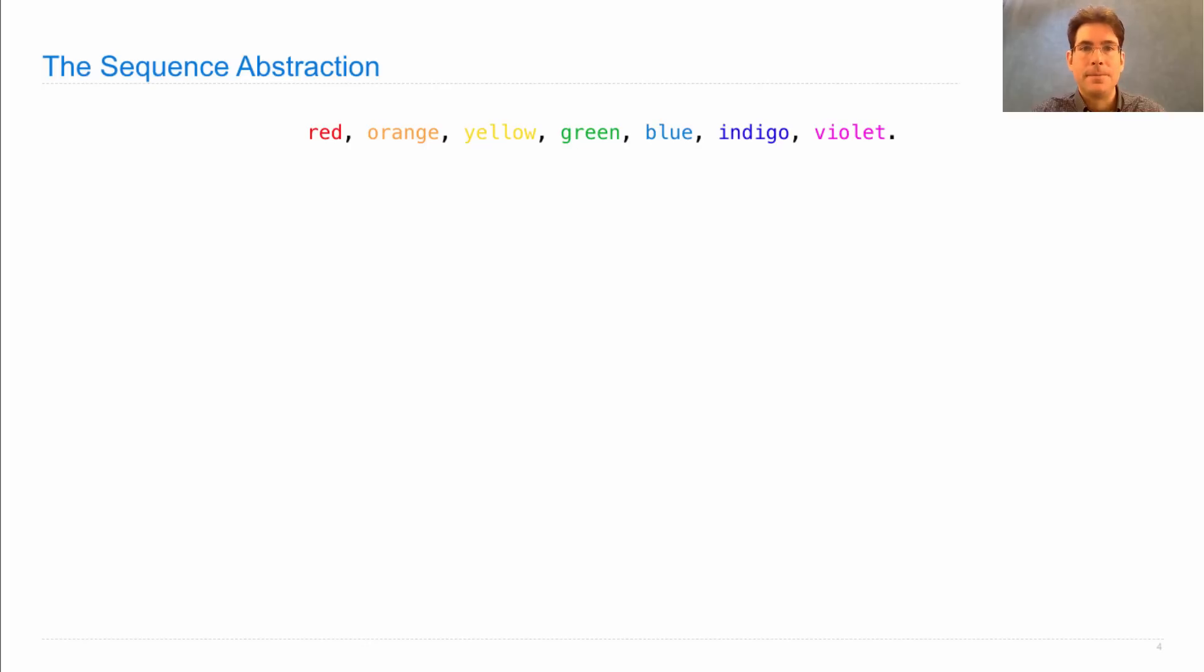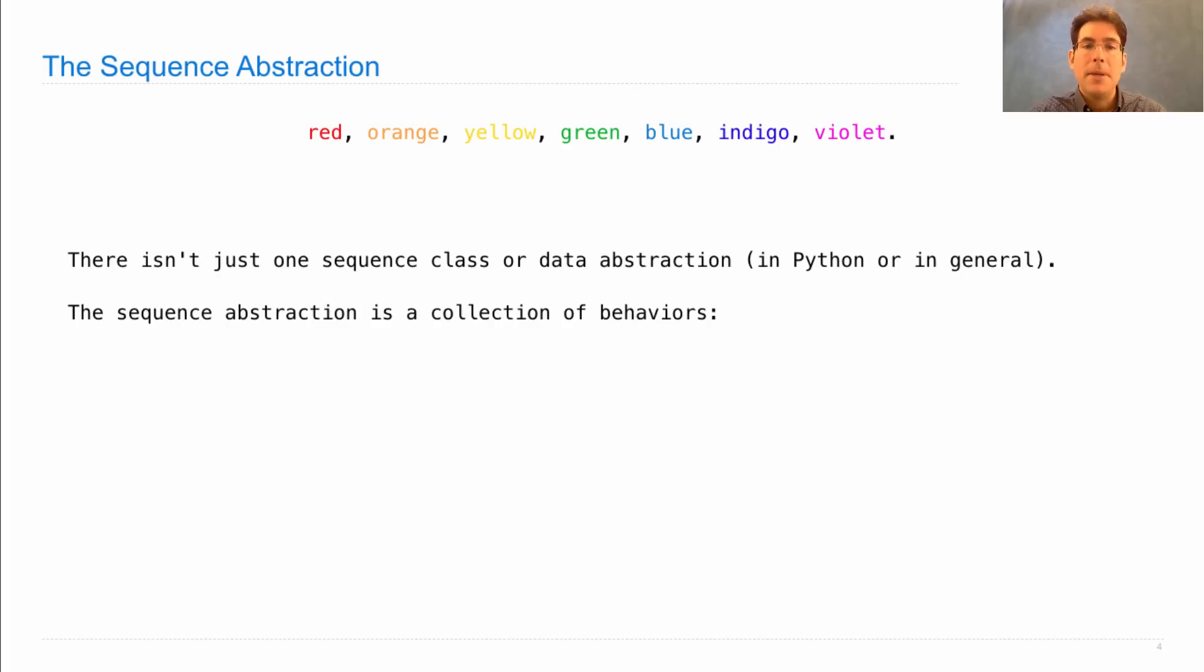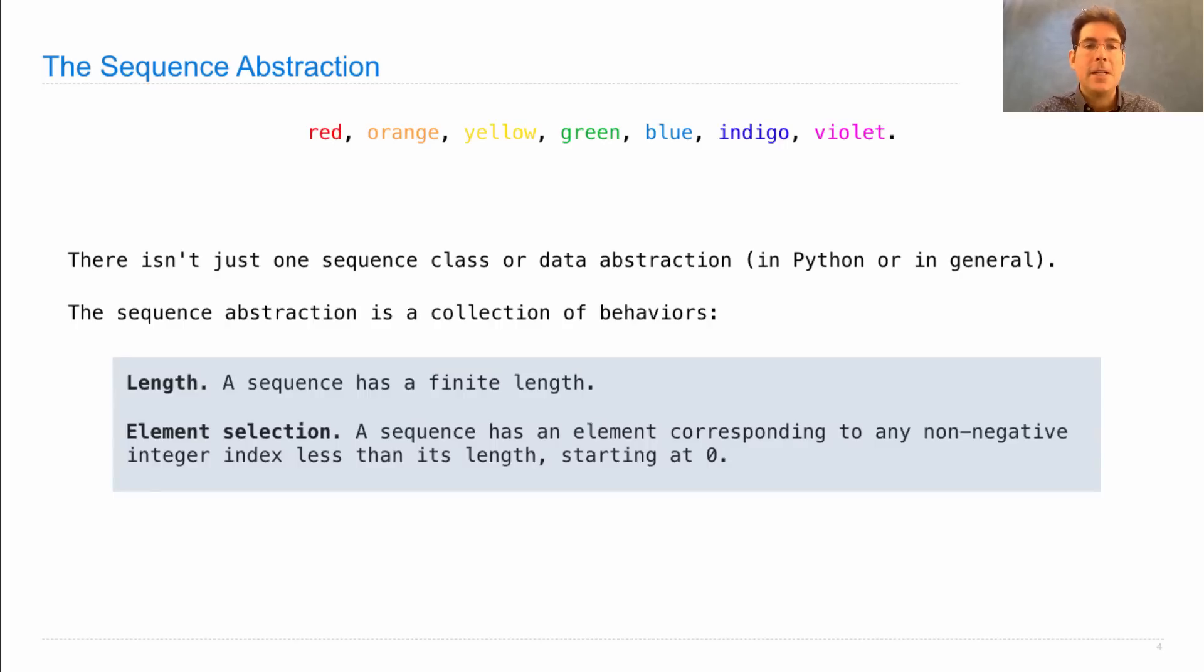So what is a sequence anyway? Well, it's a bunch of elements in an order. And there isn't just one sequence class or data abstraction in Python or in general, but instead it's a collection of behaviors that include having a length. So this sequence has length seven.